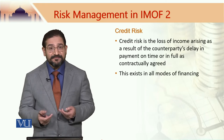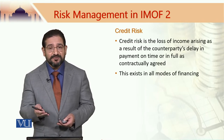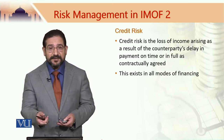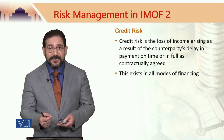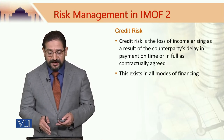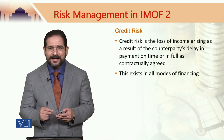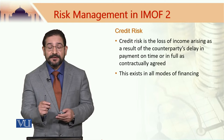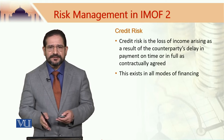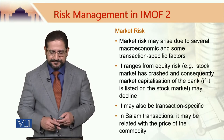Credit risk is the loss of income arising as a result of the counterparty — it could be a borrower, someone who has got financing on a credit basis, or someone who has bought a commodity and has to pay for it at an agreed time or in full as contractually agreed. When someone does not pay in time or does not pay at all, credit risk arises. This exists in all modes of finance.